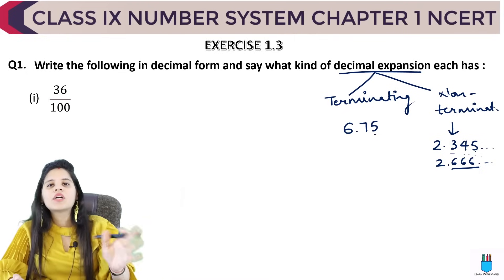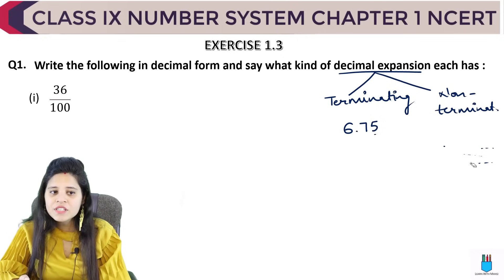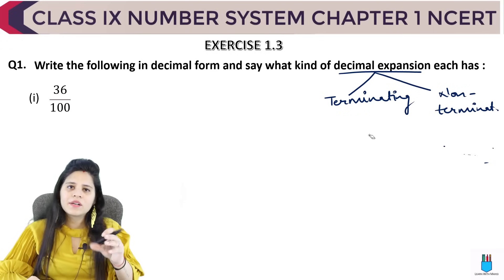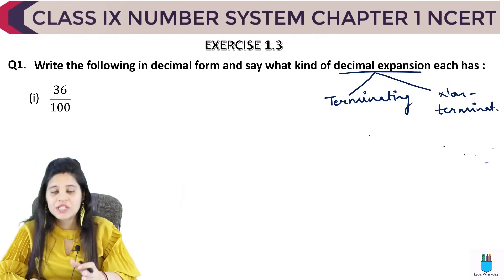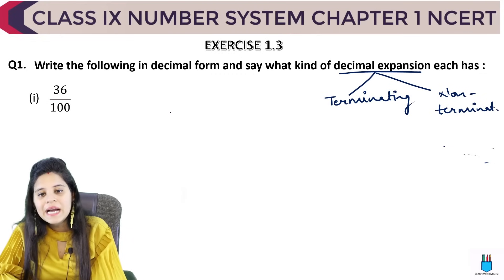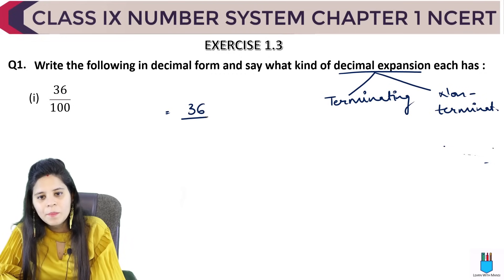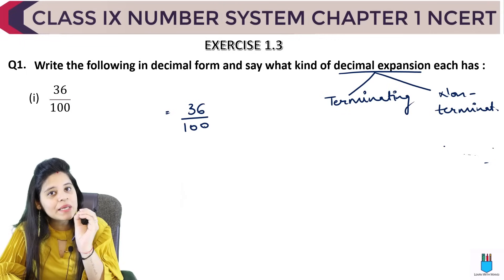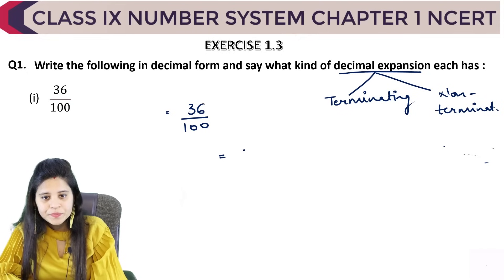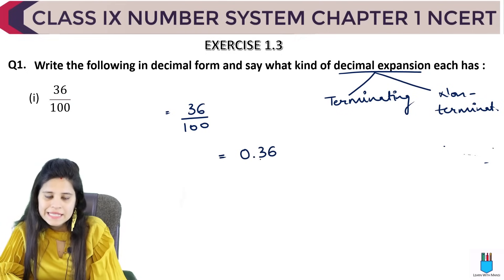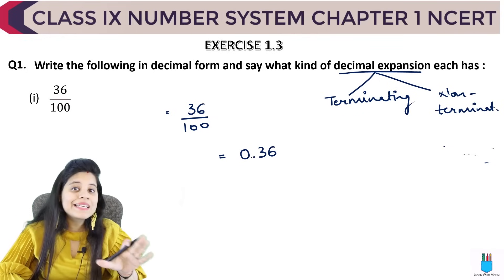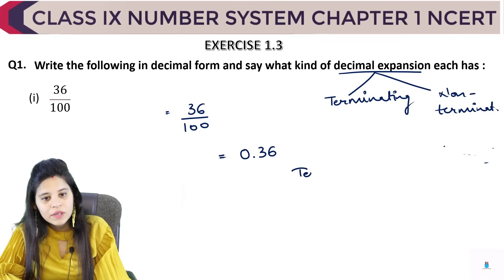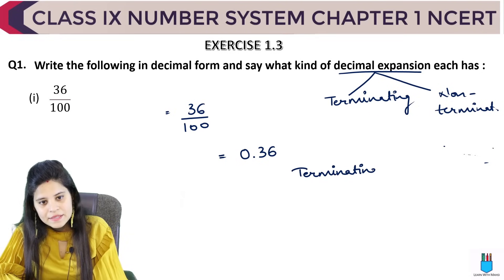The first part is 36 upon 100. This is the most simple one. If you have any fraction with denominator 10, 100, 1000, then simply — here 36 upon 100 means there are two zeros with 1, so there are two digits after the decimal. I can simply write it as 0.36. Since 0.36 goes no further, this is terminating.